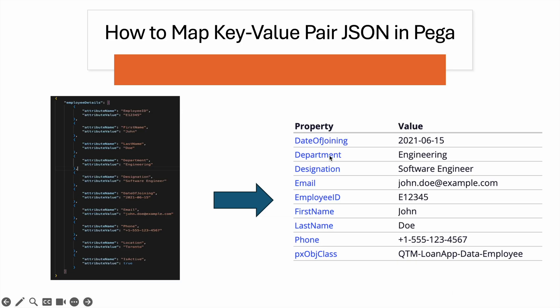Hello everyone, good evening. Today we are going to learn how to map key-value pair JSON in Pega. This happens very frequently when we try to integrate with other systems — we get a response like this where they respond in key-value pairs. In the JSON, it's returning the employee details, with attribute name and attribute value. For example, attribute name is employee ID and attribute value is E1234, similarly for first name and last name.